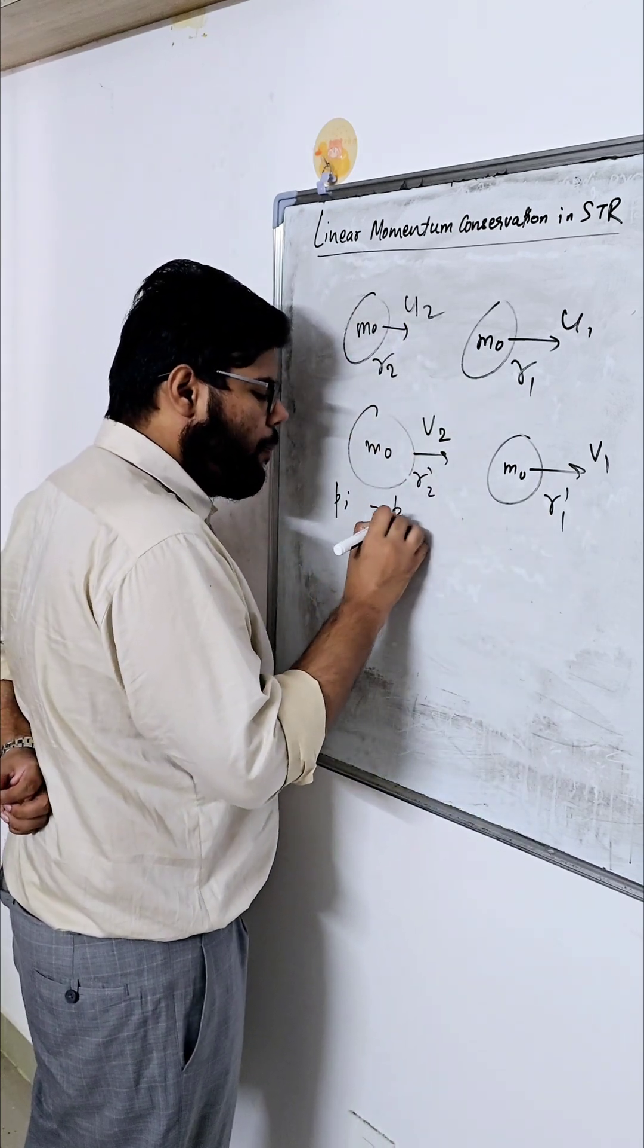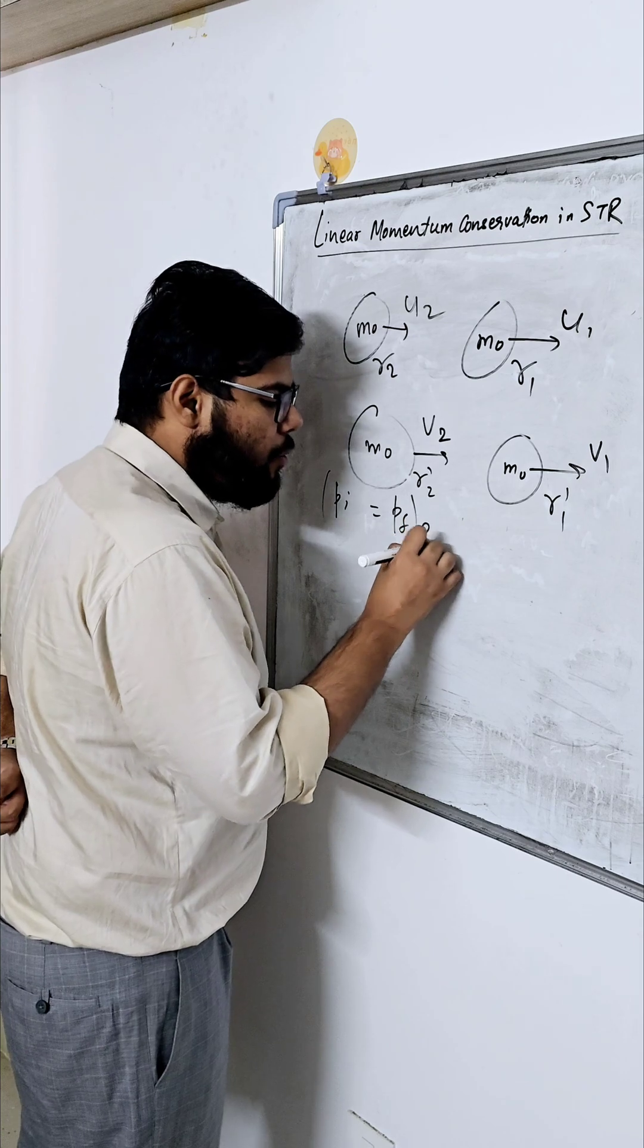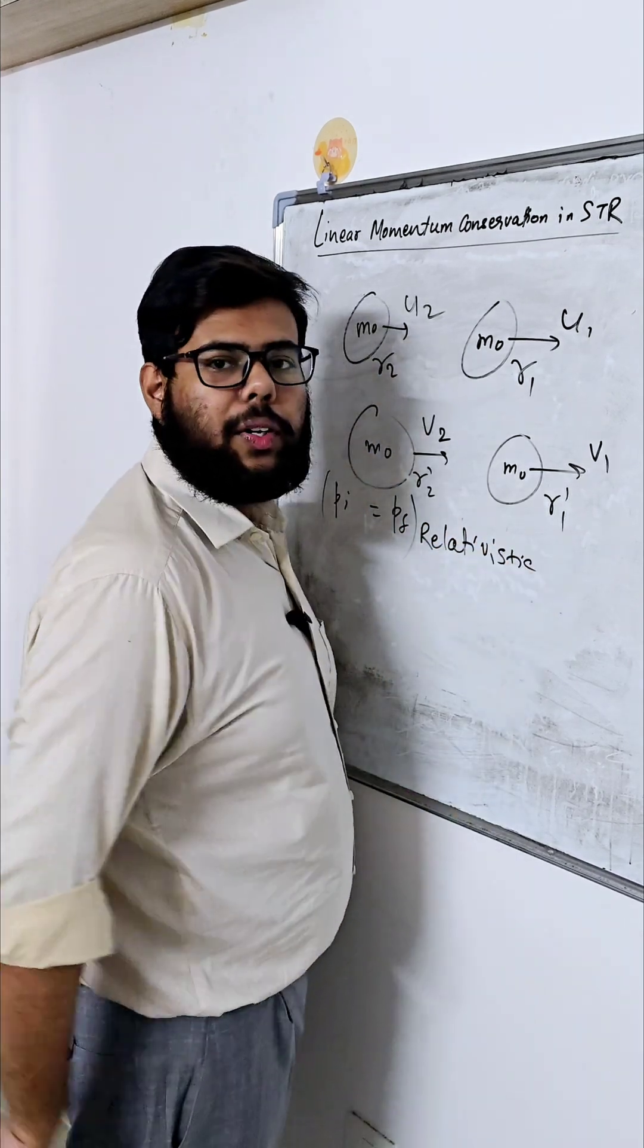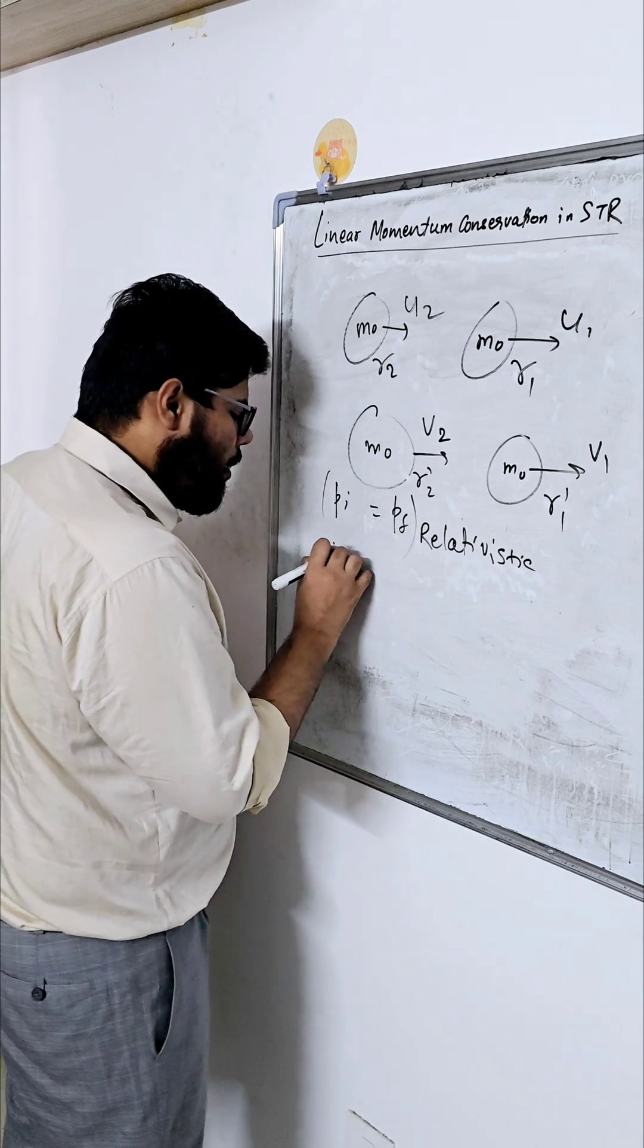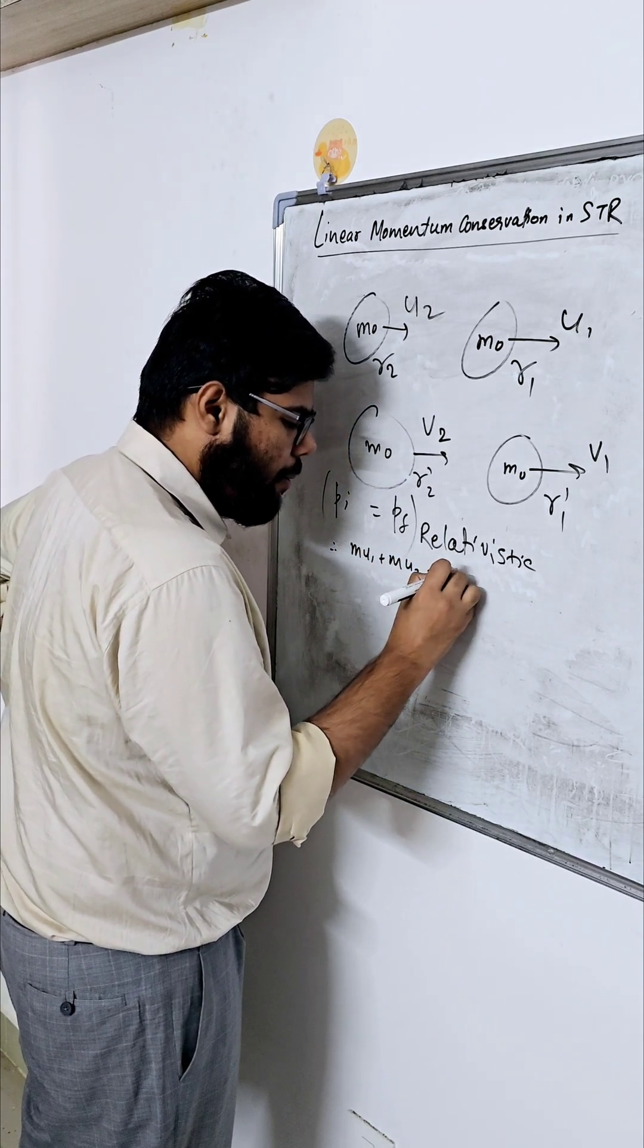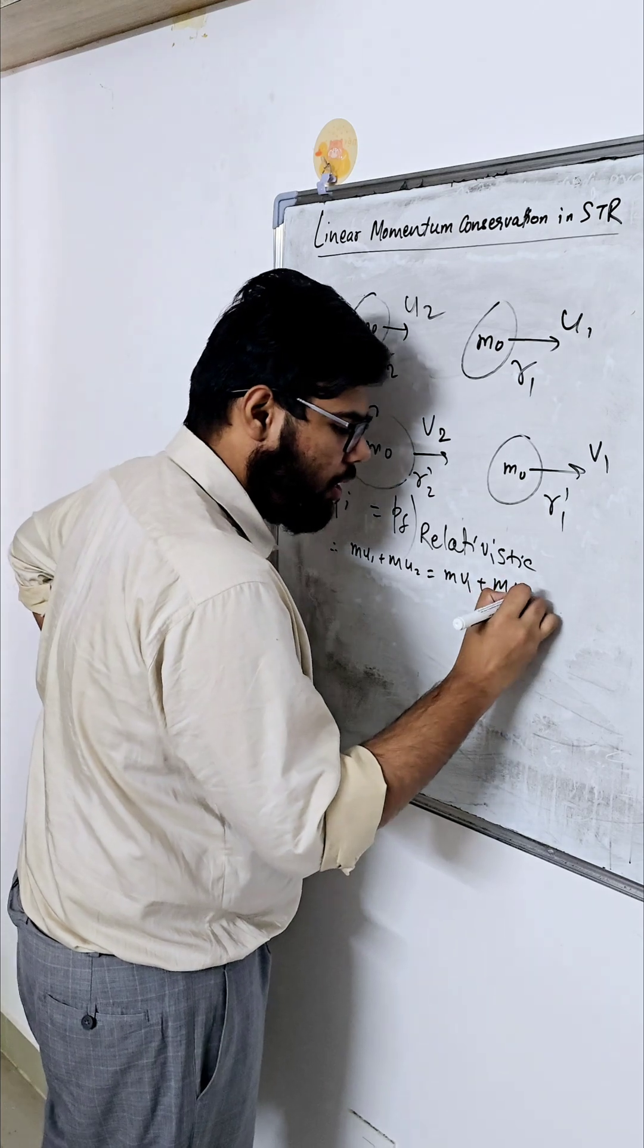So Pi is equal to Pf, where we have to apply relativistic linear momentum conservation.